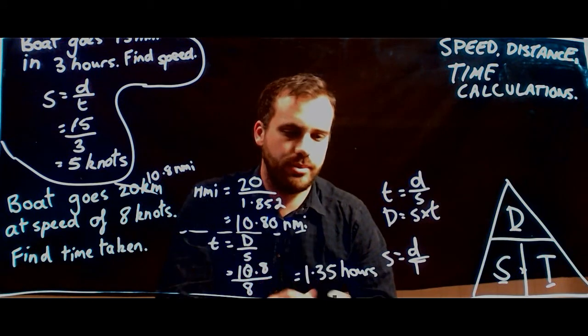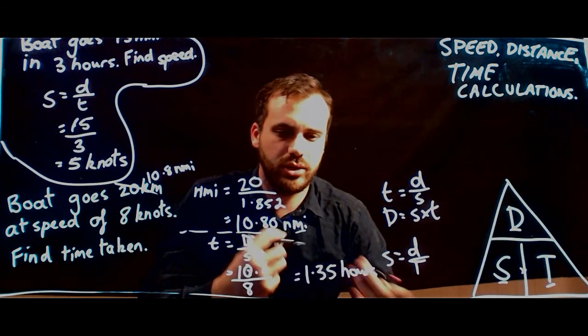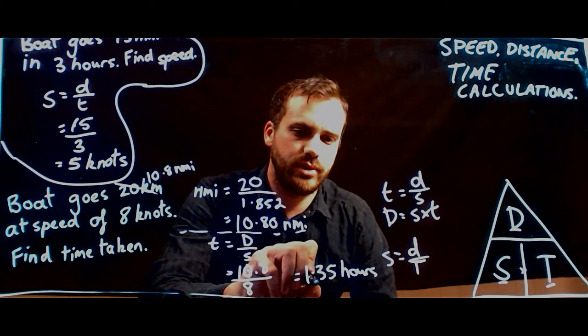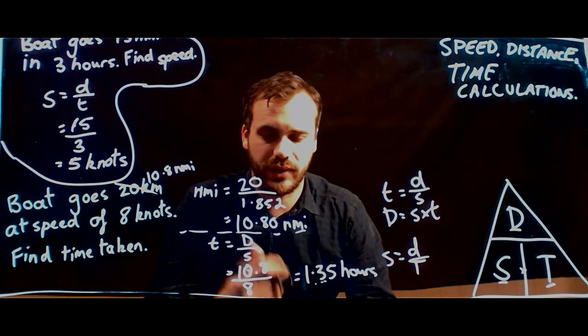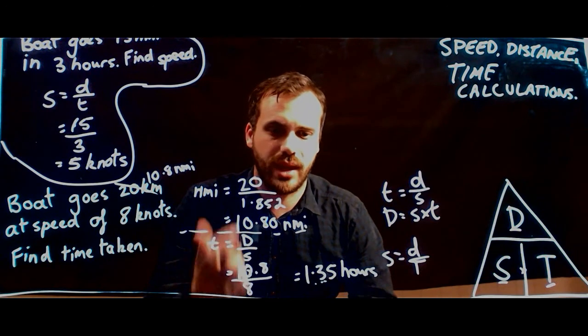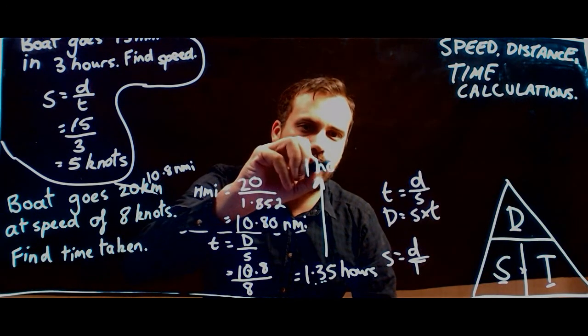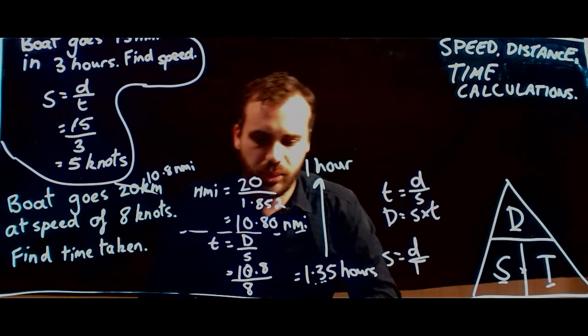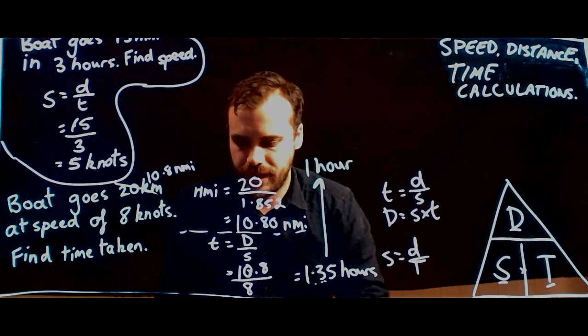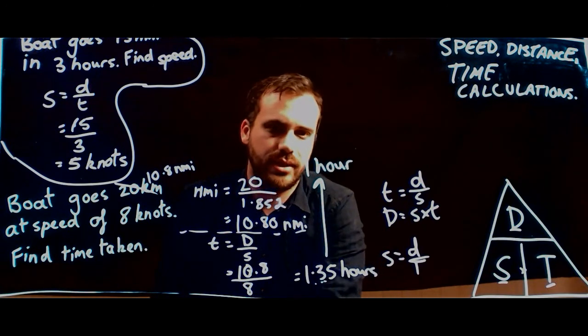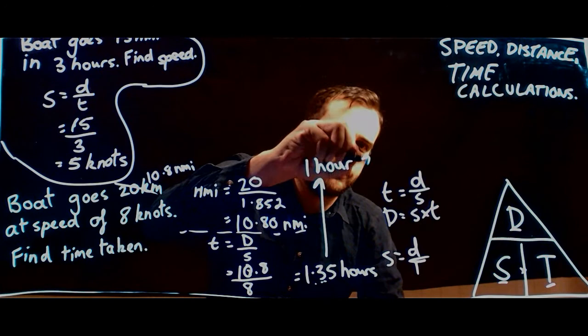Now if you really want to be pedantic about that, this answer is probably good enough, but this 0.35 hours, people don't really talk in 0.35 hours. They talk in hours and minutes. So that's going to be equal to 1 hour. And then that 0.35, if I do 0.35 times 60 on my calculator, that'll give me 21 minutes.